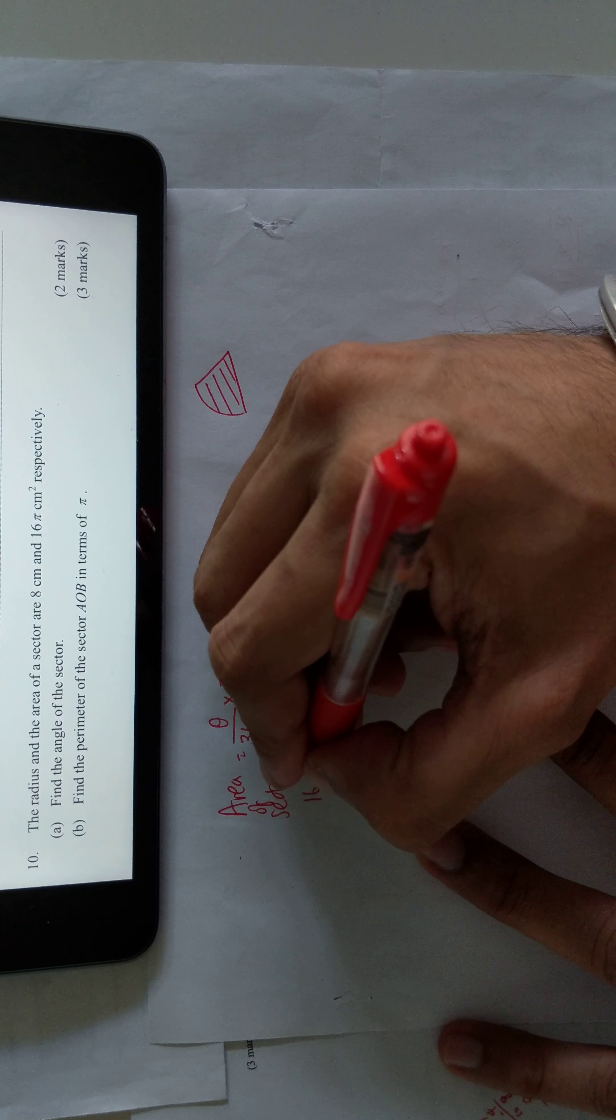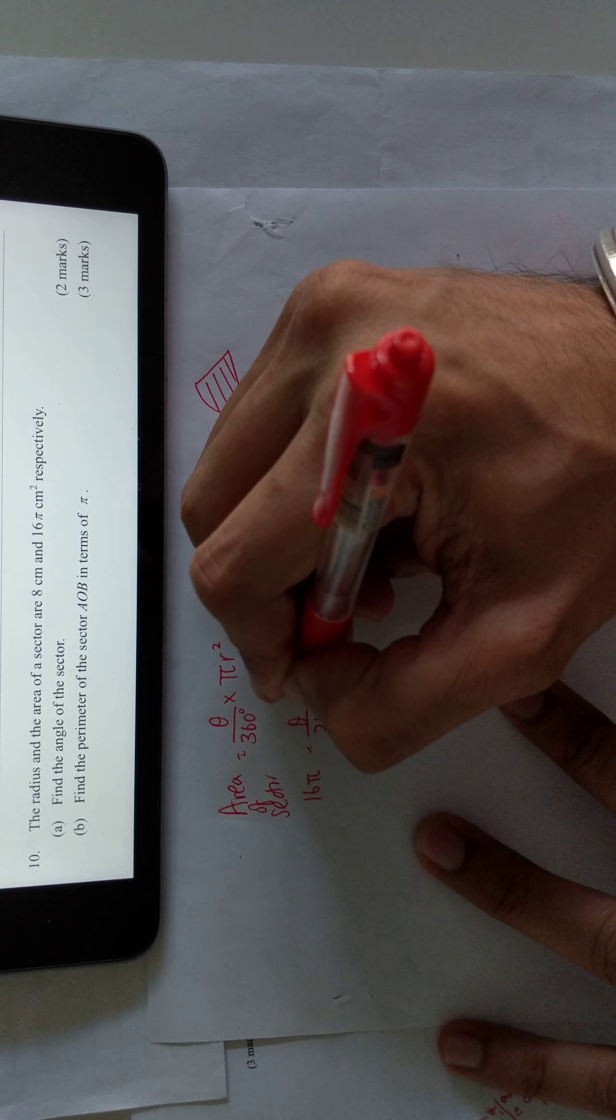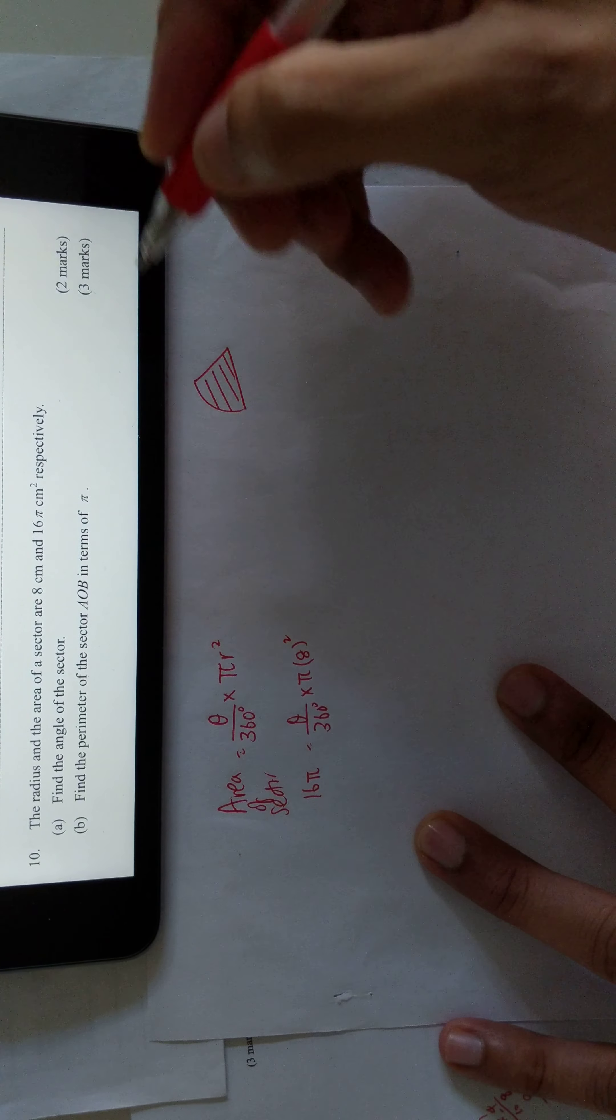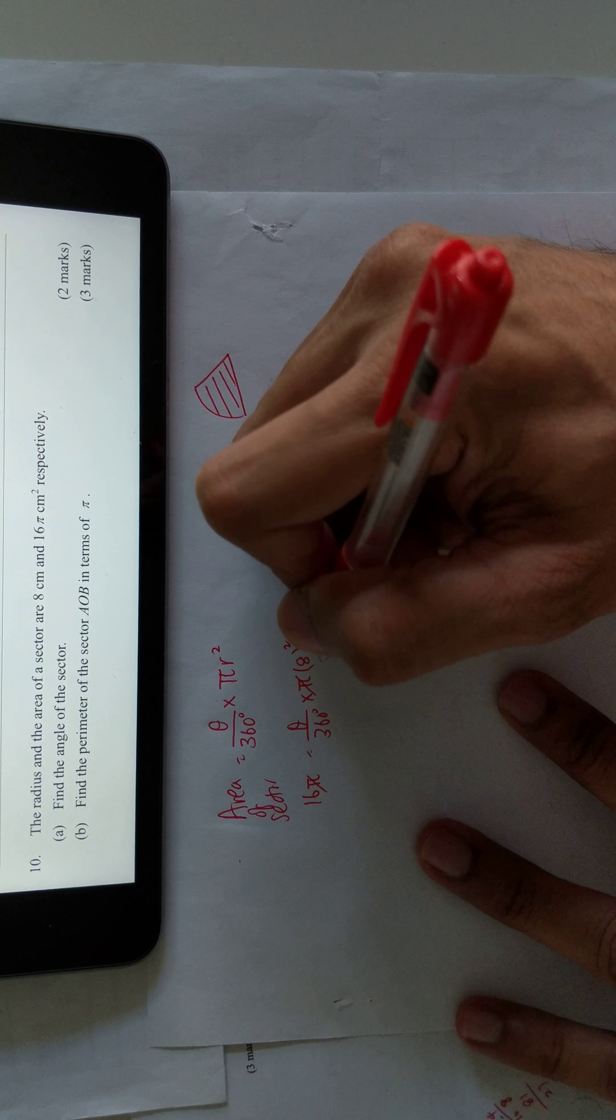Since the area of the sector is given, which is 16π, and the radius is 8, we can first cancel π on both sides.